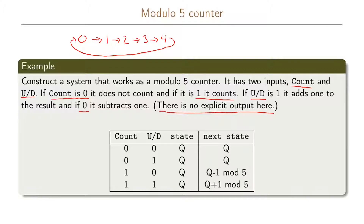Here is a summary of what will happen in our counter. If the input signals count and u/d are 0,0 or 0,1 and we are in state q, we will stay in state q — because count is 0, we do not count. If count is 1 we do count, and u/d says in which direction. If u/d is 0 we count downwards, going from state q to state q minus 1 modulo 5, so if we are in state 0 we go to state 4. If count is 1 and u/d is 1 we count upwards, going from state q to state q plus 1 modulo 5, so if we are in state 4 we go to state 0.